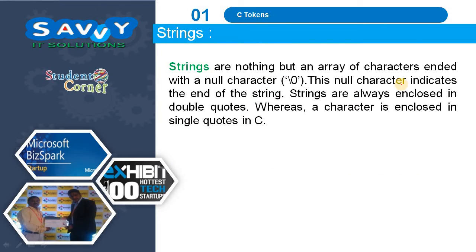Strings are nothing but an array of characters ended with a null character. This null character indicates the end of the string. Strings are always enclosed in double quotes, whereas a character is enclosed in single quotes in C.